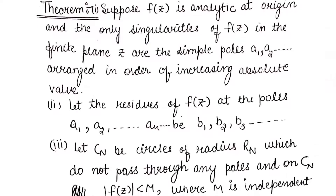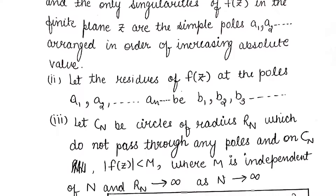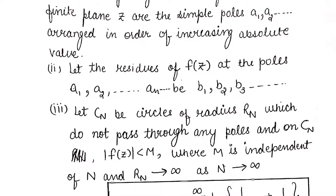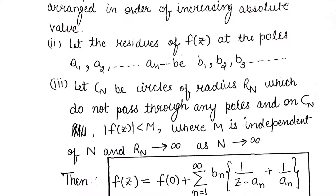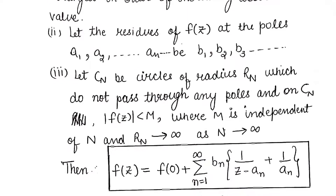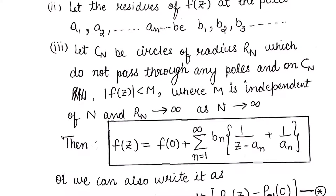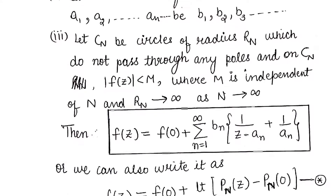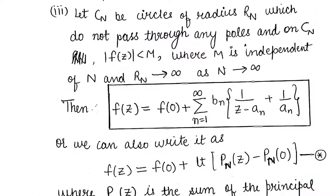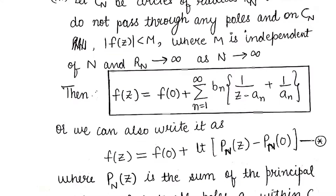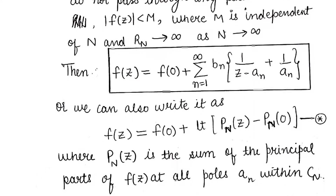The theorem is proved under certain assumptions. The first assumption is that f(z) is analytic at the origin and the only singularities in the finite plane are the simple poles a₁, a₂, a₃, ... arranged in order of increasing absolute value. The second assumption is that the residues of f(z) at poles a₁, a₂, ... are b₁, b₂, b₃, ... The third assumption is that we consider circles Cₙ with radius Rₙ which do not pass through any pole, and on Cₙ, |f(z)| ≤ M where M is independent of the radius.